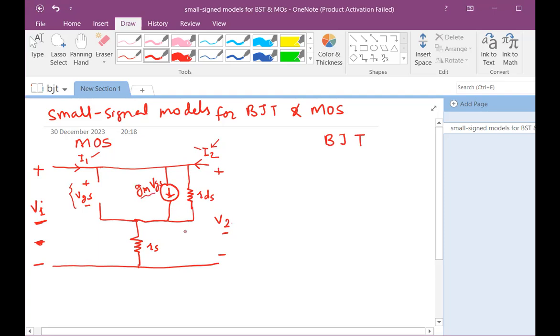This current flows through the rds to develop the output voltage v2. It's a kind of two-port network. So here is your circuit for which we have drawn the model. Here you have a resistance rs, then you have the transistor with vdd, and this is your NMOS transistor.